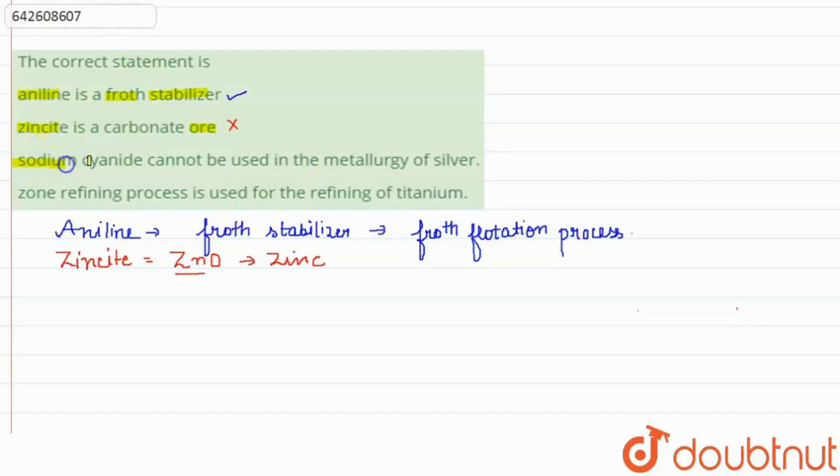So third one is sodium cyanide cannot be used in the metallurgy of silver. So yes, this statement is also incorrect. Why? Because sodium cyanide is used in the metallurgy of silver. Also we cannot extract silver from its ore without sodium cyanide, right? So this is our incorrect statement.